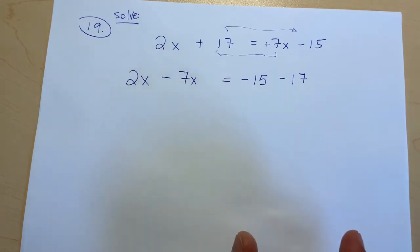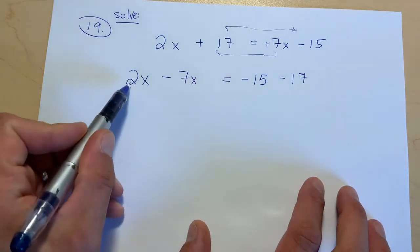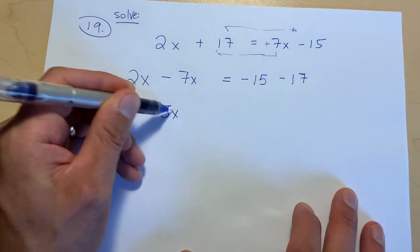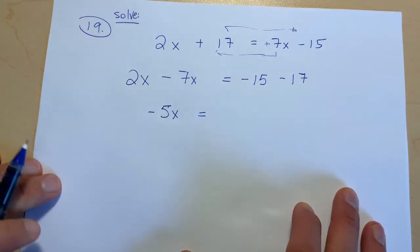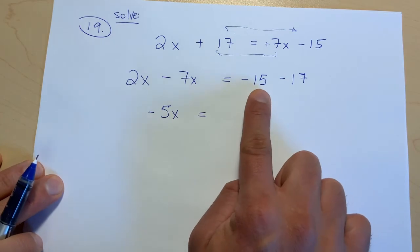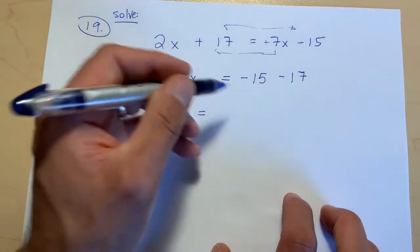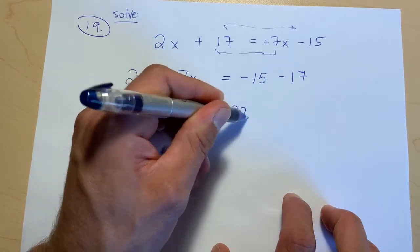Great, now we can collect these like terms. On this side, positive 2 minus 7 gives us negative 5. And on this side, in debt 15, and then you spend 17 more dollars means now you're in debt 32 dollars. Big money.